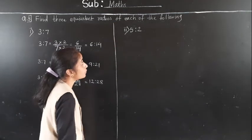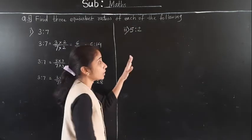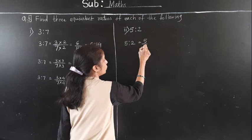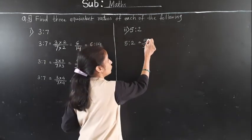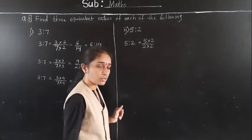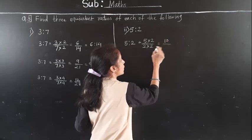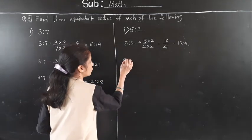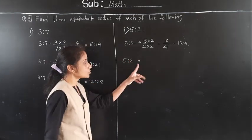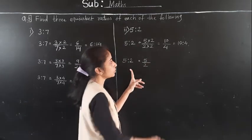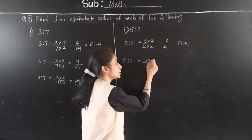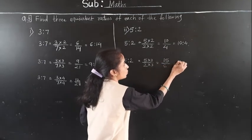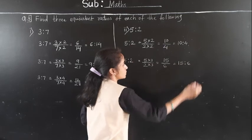Now the next example: 5 to 2. Write this ratio as a fraction: 5 upon 2. Multiply numerator and denominator by 2: 5 twos are 10, 2 twos are 4. First equivalent ratio is 10 to 4. Next, multiply by 3: 5 threes are 15, 2 threes are 6. Second equivalent ratio is 15 to 6.